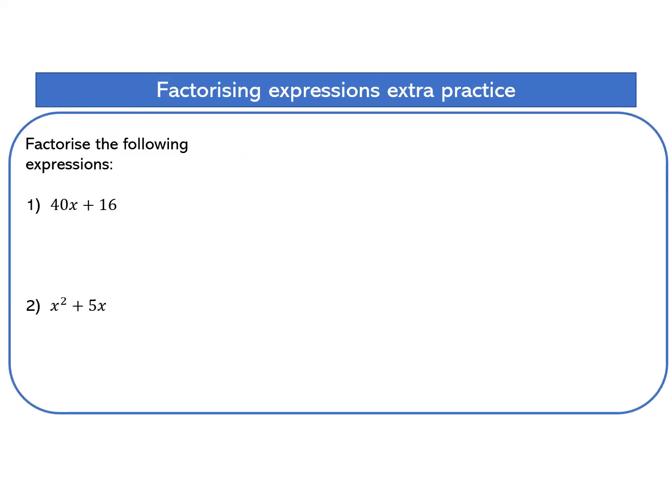Factorise the following expressions. When I've got two terms like this, I tend to first copy that out again and box it up. I'm looking at what's the highest common factor for both of these terms. What's the highest number, for example two. Sometimes it will include algebra that goes into both. I can see four goes into both, two goes into both, but the largest number is eight. So I put eight here.